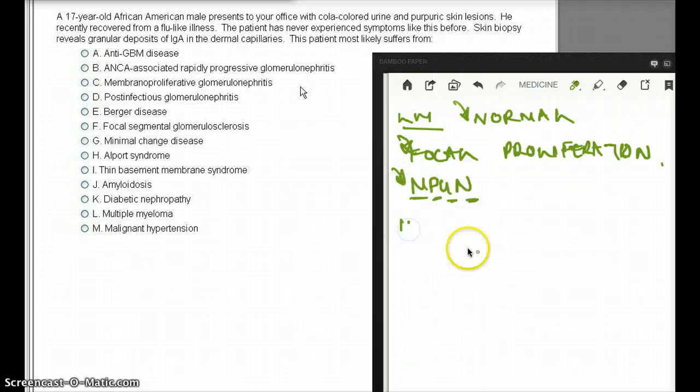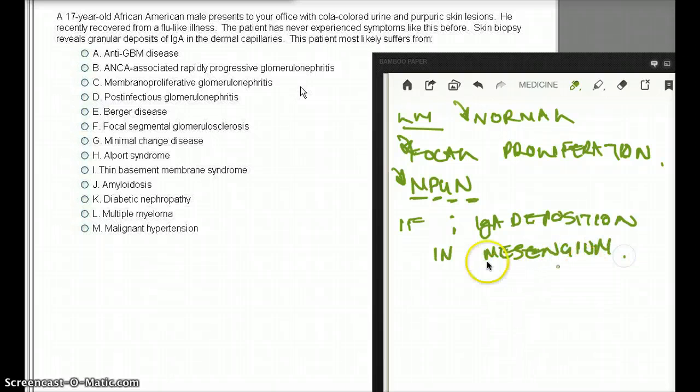What about immunofluorescence? Under immunofluorescence, we're going to see IgA deposition in the mesangium. IgA deposition in the mesangium is going to be seen in immunofluorescence. And the deposition is usually seen in the dermal capilla. Now that's what it says here. Granular deposits of IgA in dermal capillaries. That is diagnostic.